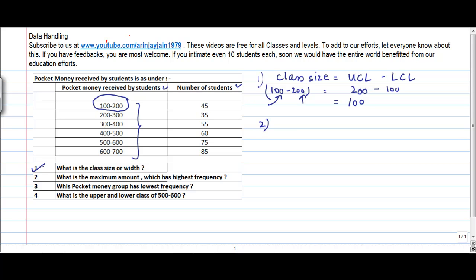So the first question is done. Second, what is the maximum amount which has the highest frequency? When I say amount, what I mean is the class interval rather than the upper class limit. So if you see the number of students, if you see the frequency, the frequency is maximum for class interval 600 to 700, which is 85.